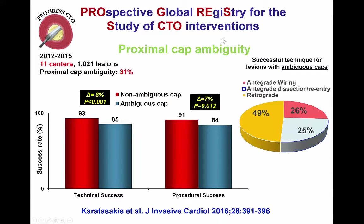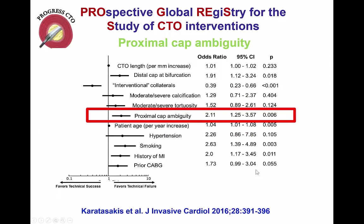This patient also had proximal cap ambiguity, which is associated with lower technical and procedural success, and higher need for using antegrade dissection re-entry or the retrograde approach. That has been shown to be independently associated with lower likelihood of technical and procedural success.